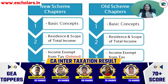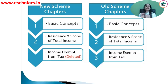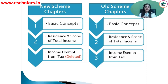What about income exempt from tax? In the new scheme, it has been deleted. There is an important point here: the income exempt from tax chapter has been deleted, but there was a portion in this chapter — SEZ, section 10AA — which was the most important area of this chapter. The chapter has been removed from your course, but section 10AA of SEZ has been moved into the deductions chapter, that is, deductions from gross total income. So in the old scheme there were three chapters in module 1, while in the new scheme there are two chapters in module 1.